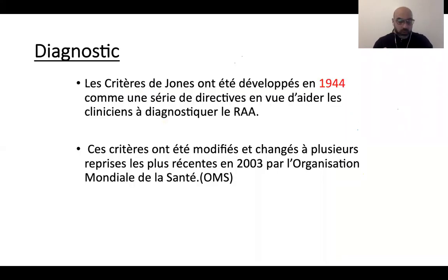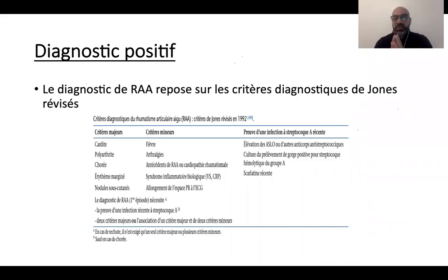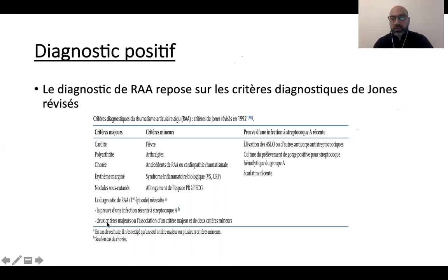Pour poser le diagnostic de rhumatisme articulaire aigu, c'est un faisceau d'arguments. Les critères de Jones, développés en 1944 et revisités par l'OMS, nécessitent : la preuve d'infection streptococcique plus deux critères majeurs, ou la preuve d'infection plus un critère majeur et deux critères mineurs.